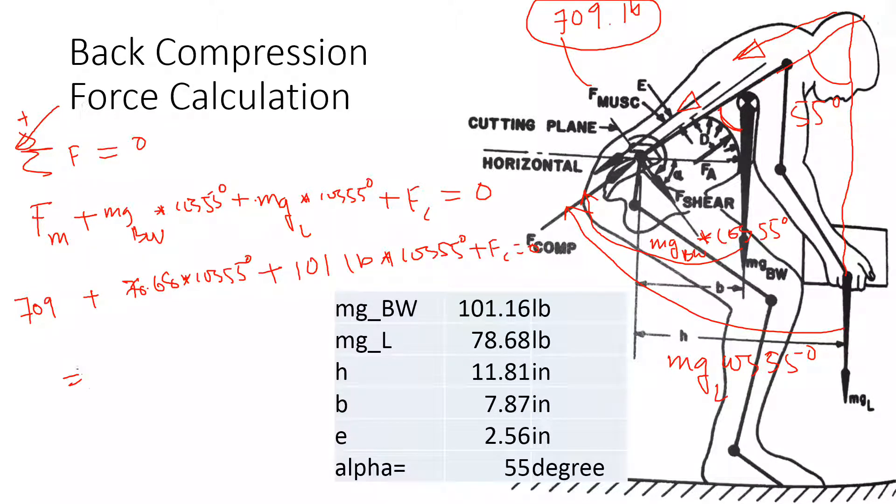I have calculated that the compression force on the lumbar disc was 812 pounds, which is a lot. According to NIOSH, the National Institute for Occupational Safety and Health, the maximum recommended for back compression is around 750 pounds.